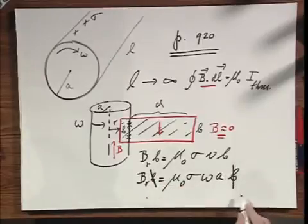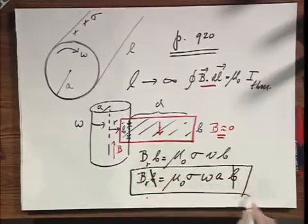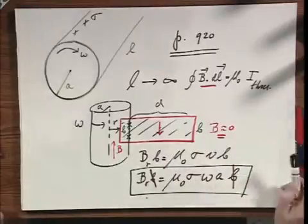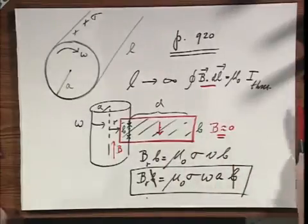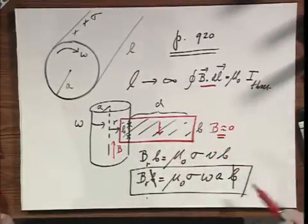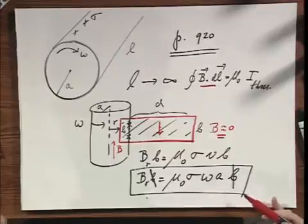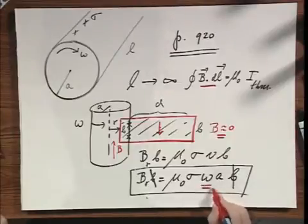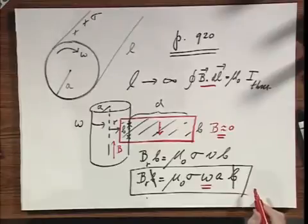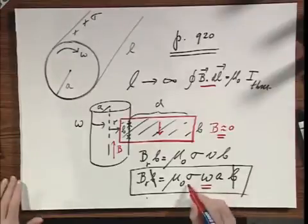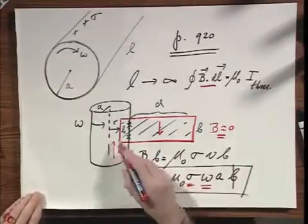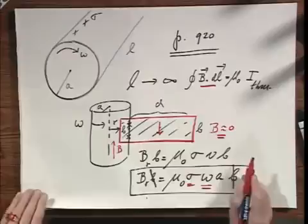Clearly the little b cancels, because Ampere's Law doesn't care about how long you choose the loop. The magnetic field increases when omega goes up — that is intuitive. And it also increases if you have more surface charge on your cylinder.